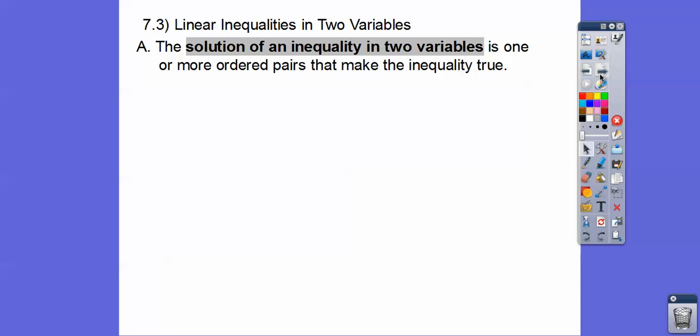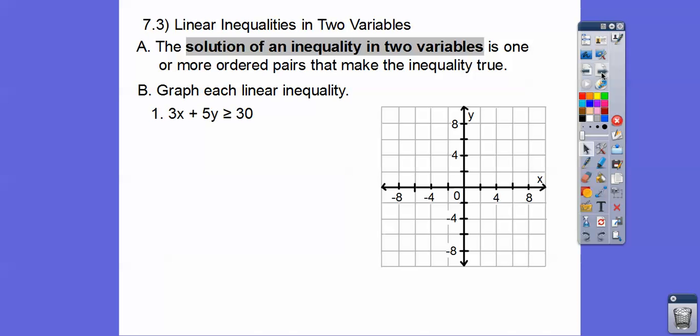All right, so here we go. A solution of an inequality in two variables is one or more ordered pairs that'll make the inequality true. Two variables is going to graph us a line. So let's graph each linear inequality. Here's the first one, 3x + 5y ≥ 30. In this lesson, they're going to ask us to solve for y. So let's go ahead and do that.